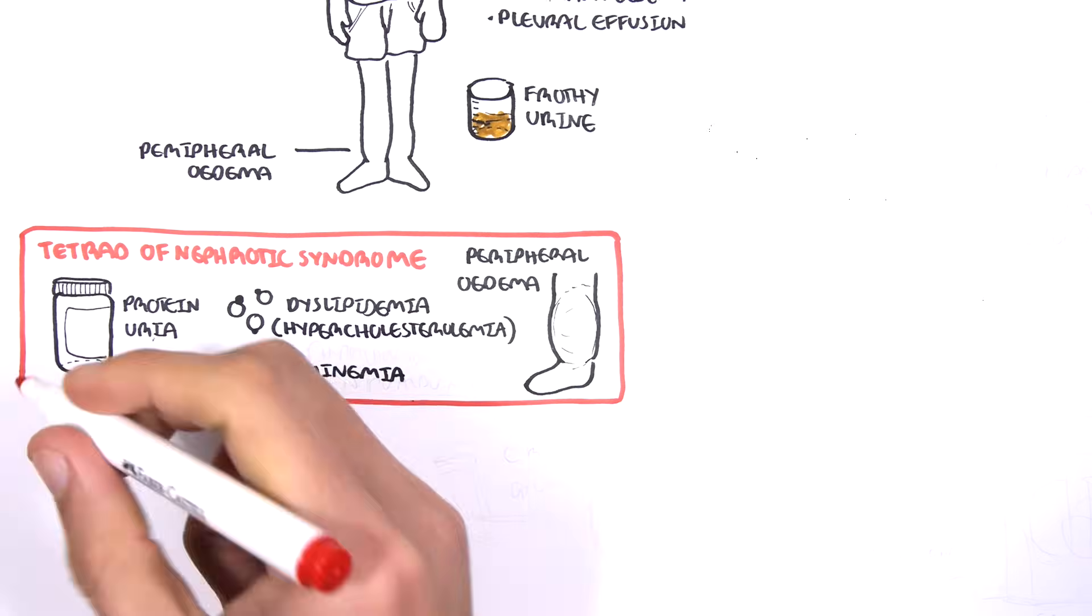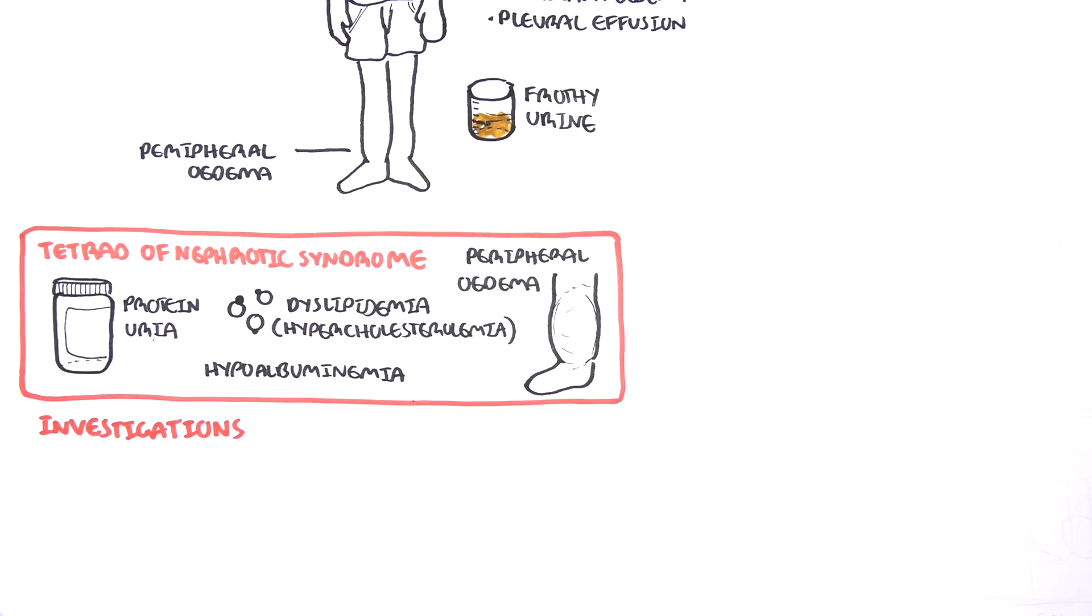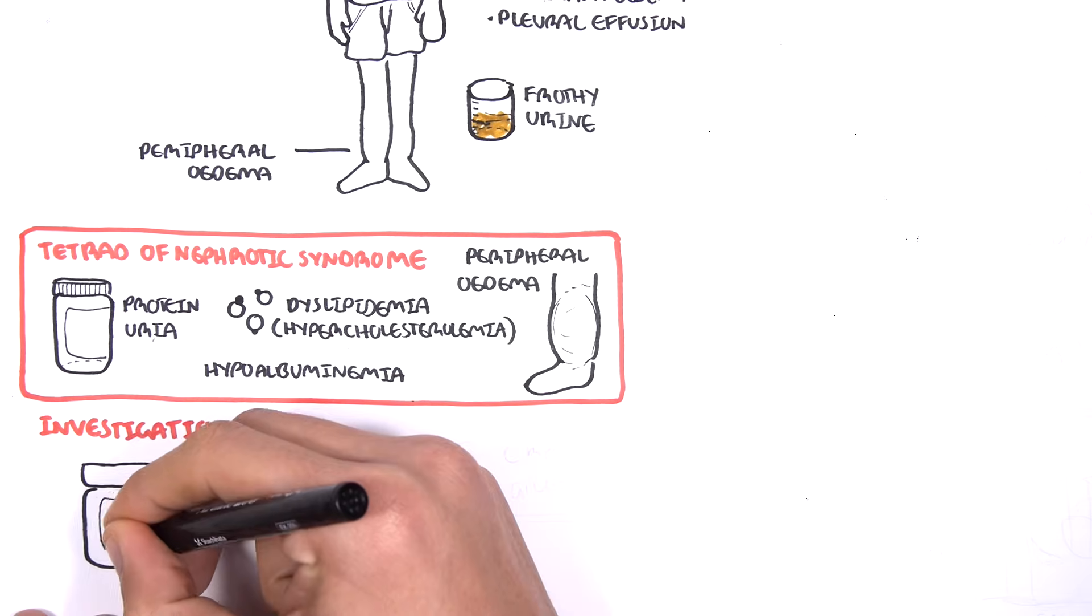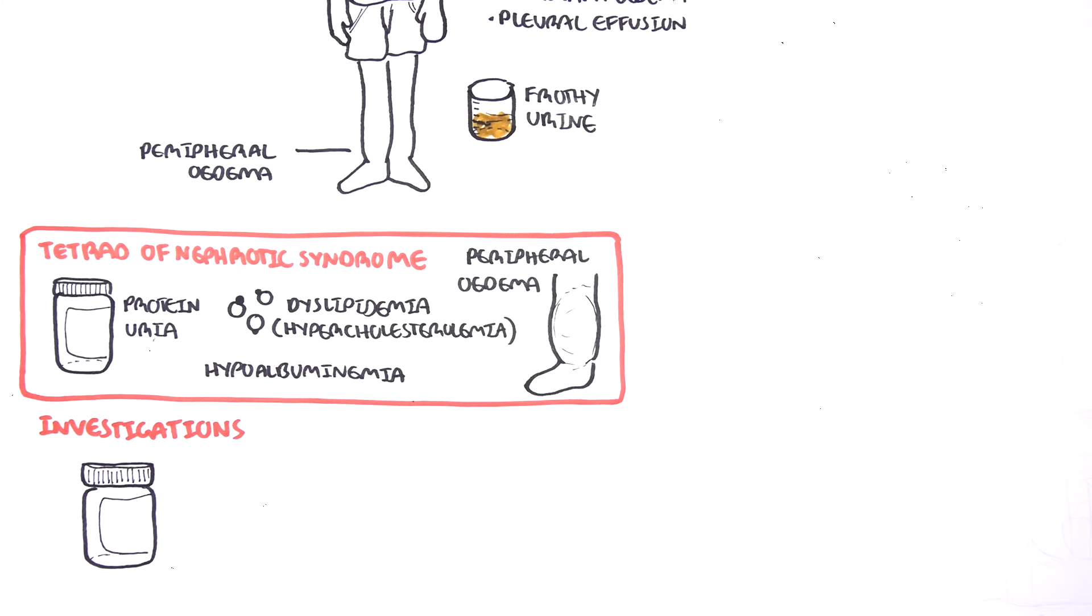Next is investigations. There are many causes of nephrotic syndrome, and these will be discussed in a separate video. Some common causes include diabetic nephropathy, certain connective tissue diseases, and autoimmune immunological problems that attack the kidneys. Investigations are performed to assess severity, diagnose nephrotic syndrome, and differentiate the different types.